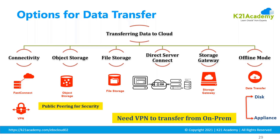For the File Storage Service, you need a VPN connection because the file storage is mounted on compute instances using a private IP, not a public IP. If you have VPN connectivity between your on-premise environment and the Oracle data center, you can mount the file system from your on-premise machine and copy data to it. Multiple compute instances can be added to the same file storage service, enabling fast migration to the cloud. You can also use a direct SSH connection from on-premise to the cloud, though VPN is required for security.